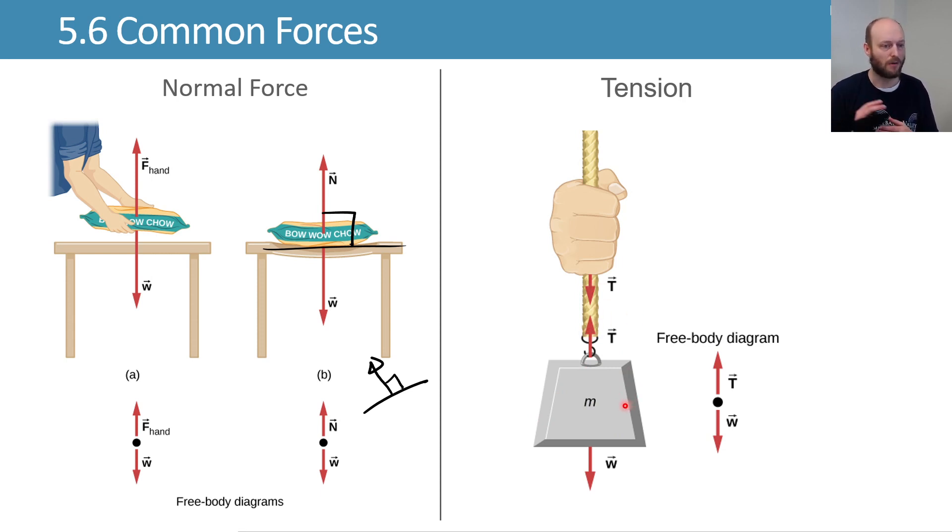Tension forces can only pull. You can't push with a rope. You can only pull with the rope. So they're always going to be pulling away from things, and they're transmitted throughout the whole rope. So that's a tension force.